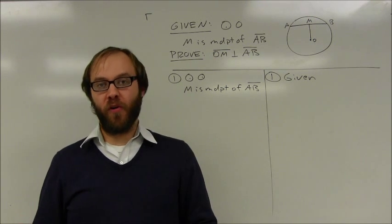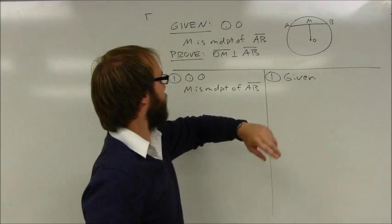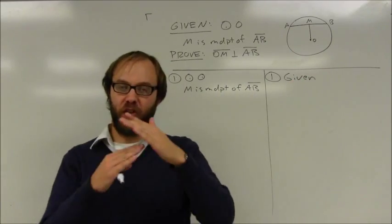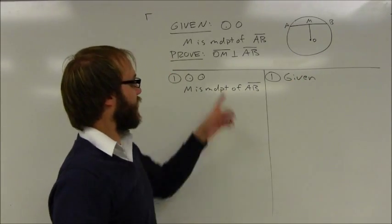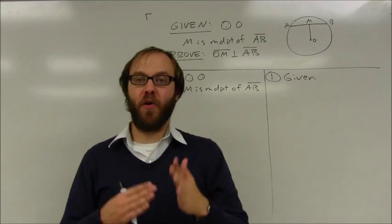This is another proof from chapter four. You can see in this example I have a circle, I'm given the center of the circle. I'm given some lines that look like they might be perpendicular. I'm told that that point is a midpoint and I want to prove that the lines are perpendicular.